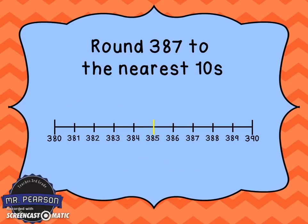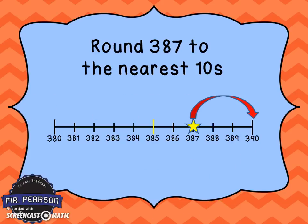Now we have the number 387. Again, the first thing we need to ask is: what two tens is 387 between? You can see from our number line that it's between 380 and 390. The next thing we're going to do is find out where 387 is on the number line. We see that 387 is closer to 390, so we're going to round it to 390.